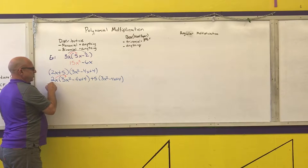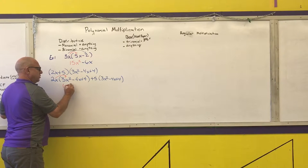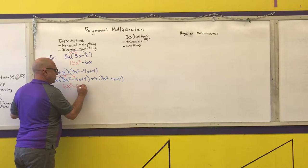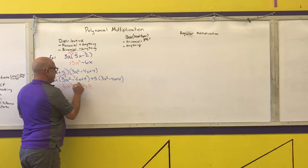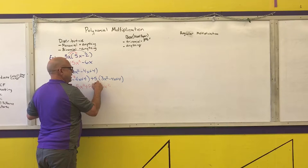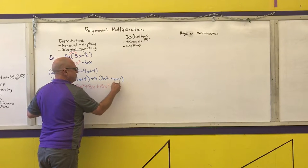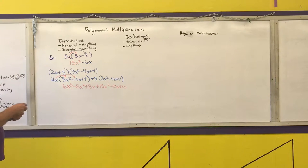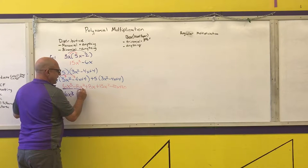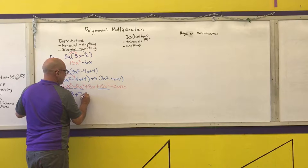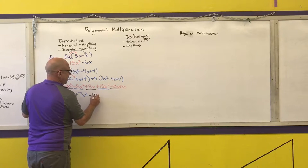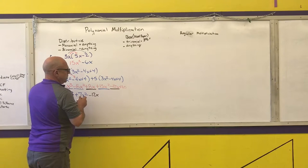So 2x times 3x² is 6x³. x times x² is x cubed. 2 times negative 4 is negative 8, and x times x is x squared, giving −8x². Then 4 times 2x is +8x. Then 5 times 3 is 15x², 5 times negative 4x is −20x, and 5 times 4 is 20. Now combining like terms: 6x³, negative 8 plus 15 is 7x², 8 minus 20 is negative 12x, and 20 as the constant.